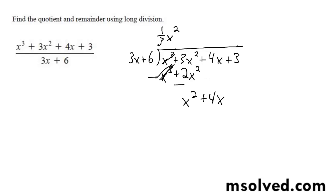Plus 4x, so 3x goes into that plus 1/3 x times. Multiply this through, we get x squared plus 2x. Switch the signs.